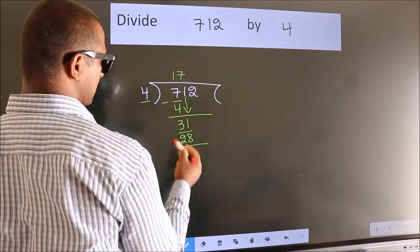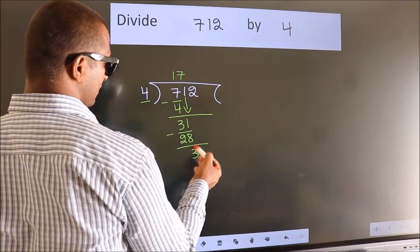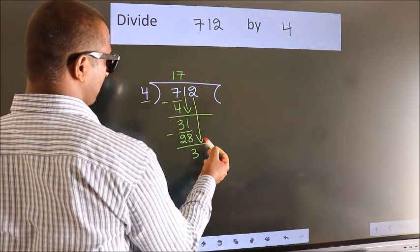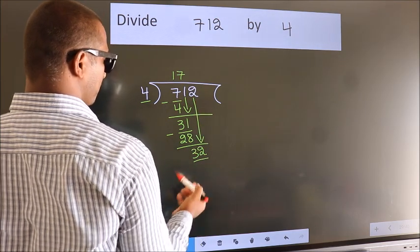Now we subtract. We get 3. After this, bring down the beside number, so 2 down. So 32.